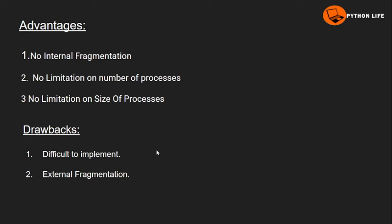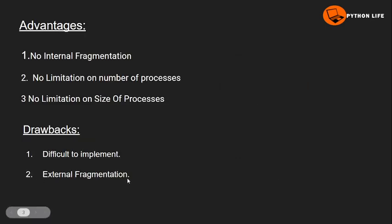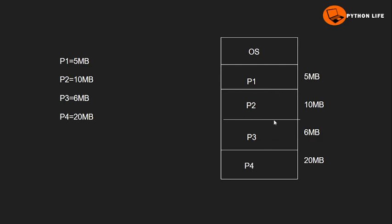These three are our advantages. Next, we have the drawbacks of variable size partition. The first drawback is it is difficult to implement, because we are allocating memory dynamically based on processes. The second drawback is external fragmentation. For example, if P1 and P3 are executed and completed, we have 5MB and 6MB of free memory left behind.